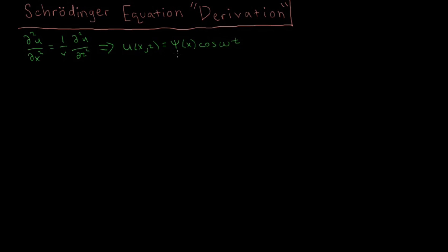If we substitute this type of equation into the classical wave equation, the part that depends on t doesn't get differentiated with respect to x, so we can pull that out. We have cosine omega t, and then we only have a function that depends on x, so this partial derivative becomes an ordinary derivative, giving us the second derivative of psi of x with respect to x.